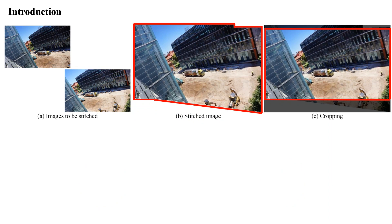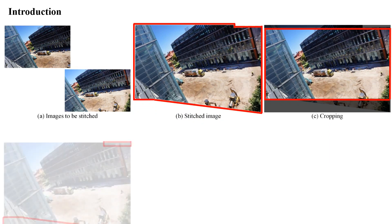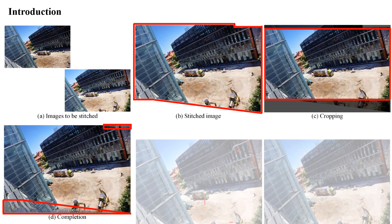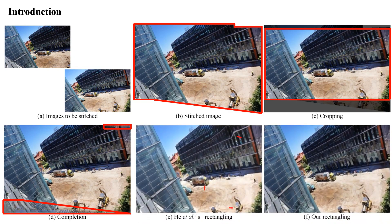However, cropping discards some image contents. Image completion can synthesize the missing regions. Nevertheless, they may generate some contents that seem to be harmonious but different from reality. To obtain a rectangular appearance without content increasing or decreasing, the rectangling technology is proposed.